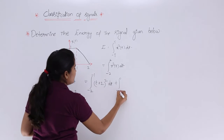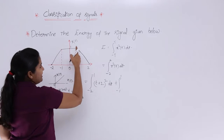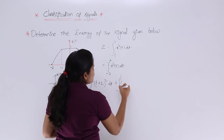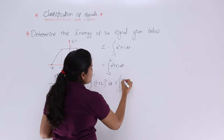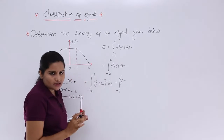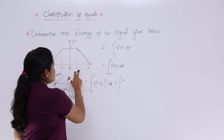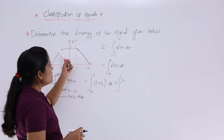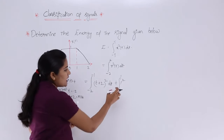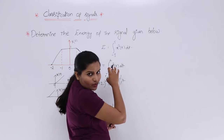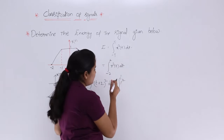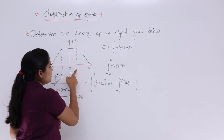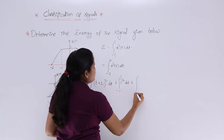From minus 1 to 1 you can notice a rectangle where the amplitude is equal to 1. So x(t) equals 1 in that interval, and 1 squared equals 1, which is what you need to consider in the energy equation because we have the square of the signal. So the second integral is from minus 1 to 1 of 1 squared dt. After 1 you have the limit from 1 to 2.